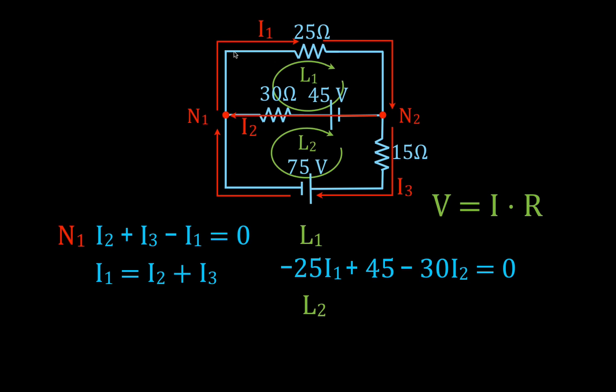Keep your negative and positive signs straight. Remember, this is I1 and this is I2 — they are not the same current, even though they're in the same loop. Different branches carry different currents, which is why we label them separately.